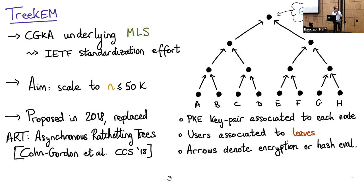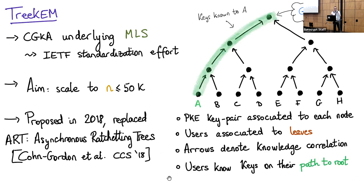So what does MLS look like? It assumes a binary tree where each node has an associated key, and the users are associated to the leaves. The arrows here denote either encryptions or hash evaluations. In particular, if a user knows the key at the source node of an edge, they will also know the secret key corresponding to the node at the sink of that edge. It follows that a user will know the keys for the nodes in their path. User A will know the keys highlighted in green. The key associated to the root, which is shared by all users, is the group key, and it will be used to encrypt messages.